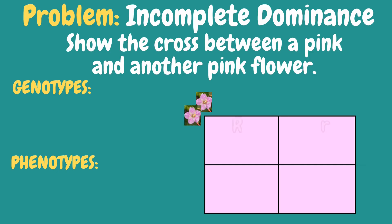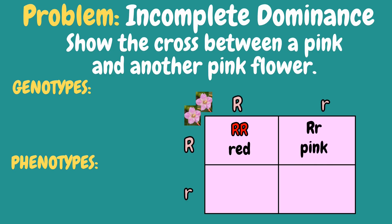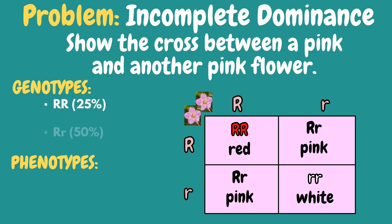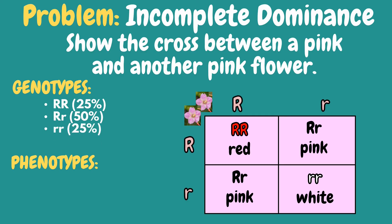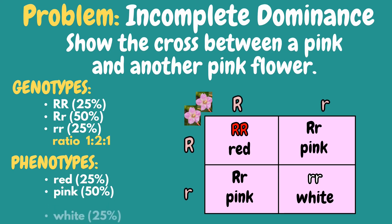Show the cross between a pink and another pink flower. The possible phenotypes and genotypes of the cross are: red, pink, another pink, and white. Based on the Punnett square, the genotypes are 25% homozygous dominant red, 50% heterozygous pink, and 25% homozygous recessive white, giving a 1:2:1 ratio. For the phenotypes, we have 25% red, 50% pink, and 25% white, also giving a 1:2:1 ratio.